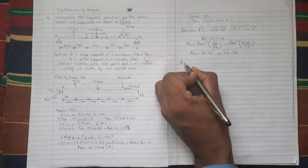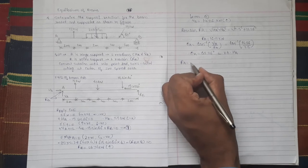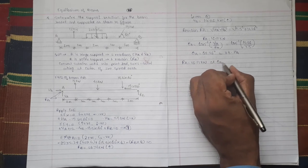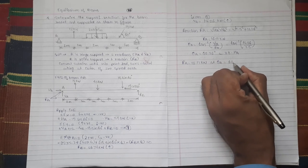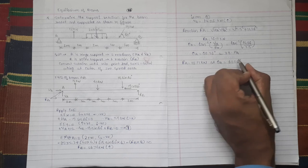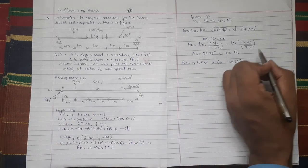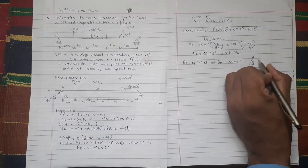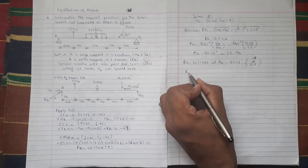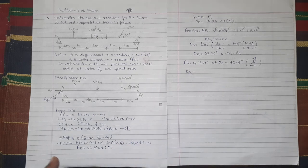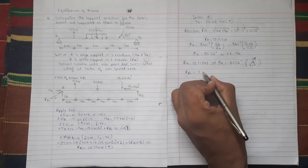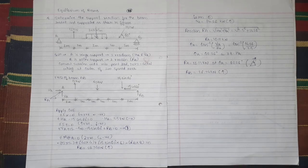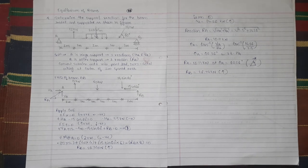So finally we can write down value of RA which is equal to 16.11 kN at θA equal to 62.26 degree. Now since HA and VA are positive, RA lies in first quadrant. And value of RB which we have calculated equals to 26.74 kN and it is acting vertically upward.